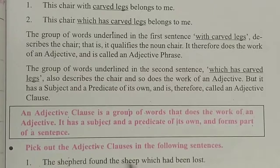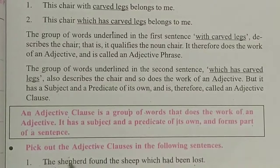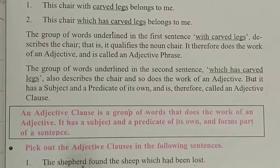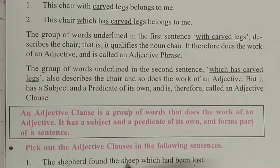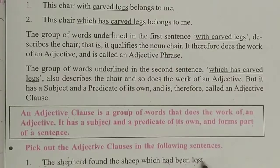The sentence is: 'The shepherd found the sheep which had been lost.' Here the noun is shepherd. So, the adjective clause of that sentence is 'which had been lost.' Shepherd and sheep are the nouns of that sentence, and 'which had been lost' is the subordinate clause or adjective clause.